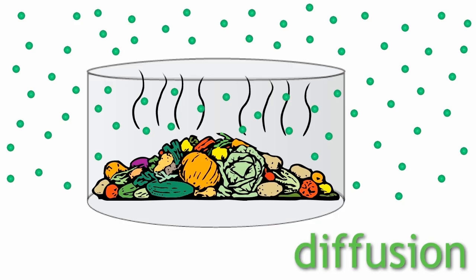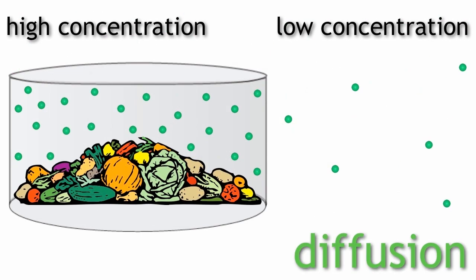Diffusion is the random movement of one gas through another from a region of high concentration, in this case inside the box, to a region of low concentration, in this case outside the box.